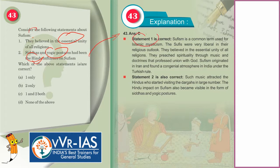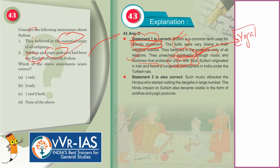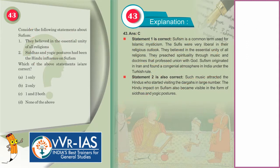The first statement is correct. Sufism is a common term for Islamic mysticism. They were liberal in their religious outlook and believed in the essential unity of all religions. They preached spirituality through music and doctrines that professed union with God — union with God in Hinduism is called Yoga. Sufism had originated in Iran and found a congenial atmosphere in India under Turkish rule. Statement 2 is also correct — the Hindu impact on Sufism became visible in the form of Siddhas and yogic postures, as music attracted Hindus who started visiting Dargahs in large numbers.